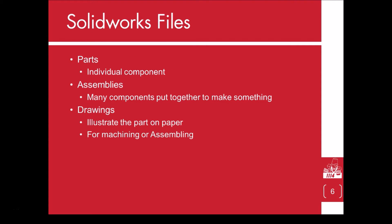There are three major types of files you can create using SOLIDWORKS: parts, assemblies, and drawings. A part is an individual component made up of features. An assembly is made up of a bunch of part files. And finally, a drawing is a file that illustrates a part or an assembly, used to show dimensions on parts or to show how to build an assembly.